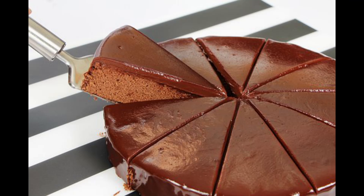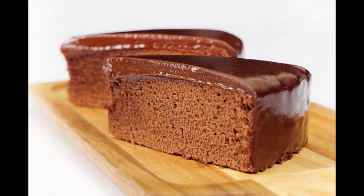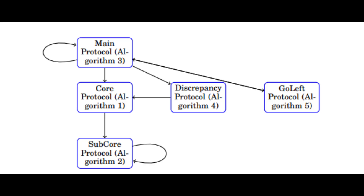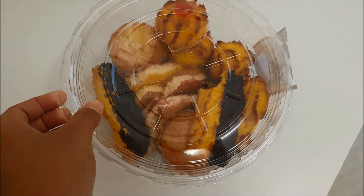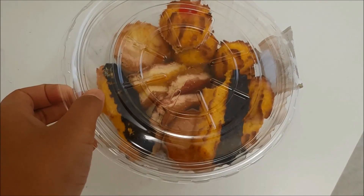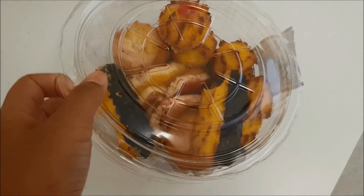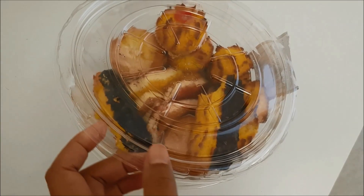Person B then cuts the slice and person C chooses their preferred piece, like the first round. If everybody now chooses different pieces, the matter is considered resolved, and it moves on to dealing with the trimmed slice. This is treated like the whole cake, with each participant performing one action that guarantees their satisfaction.